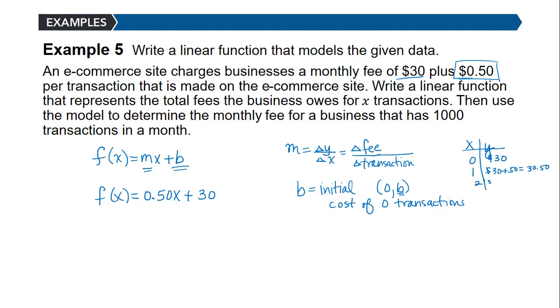If I make two transactions, it's $30 plus 50 cents for each of those, which is $1, so it would be $31. Then I could find the slope between the two points and plug into point-slope form.